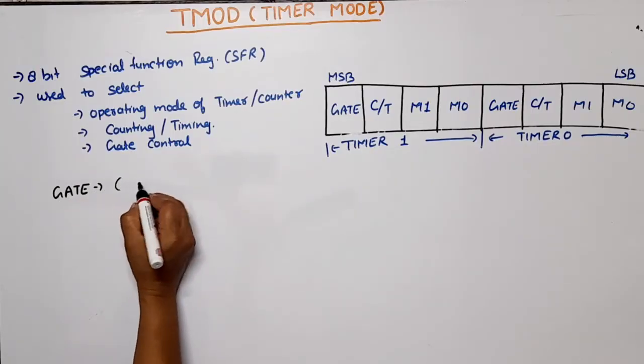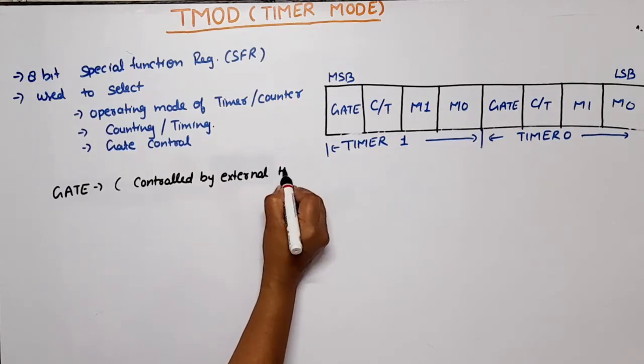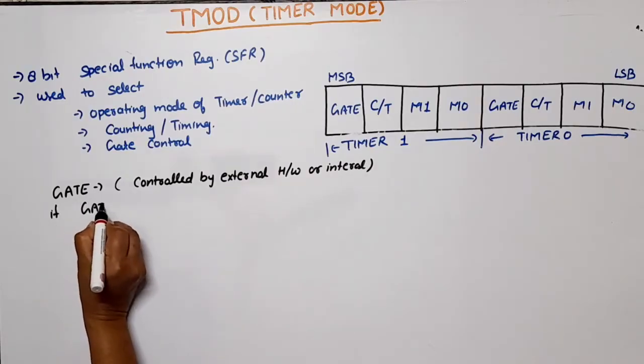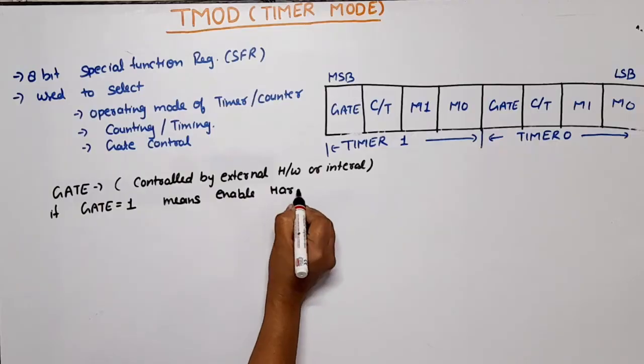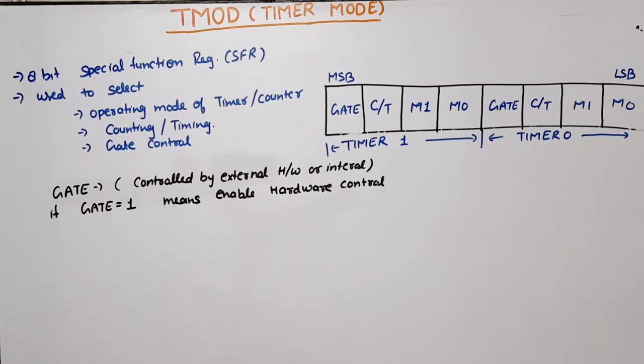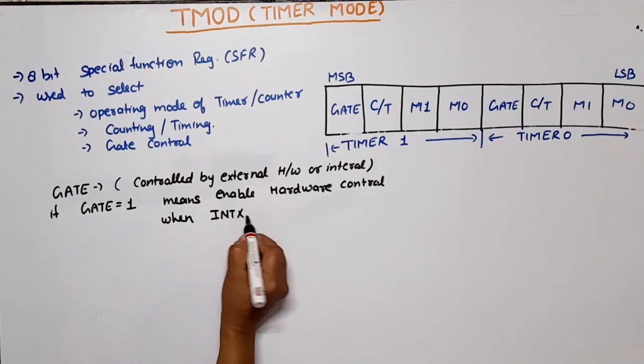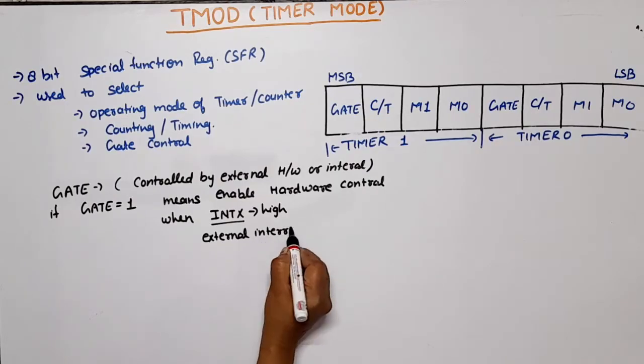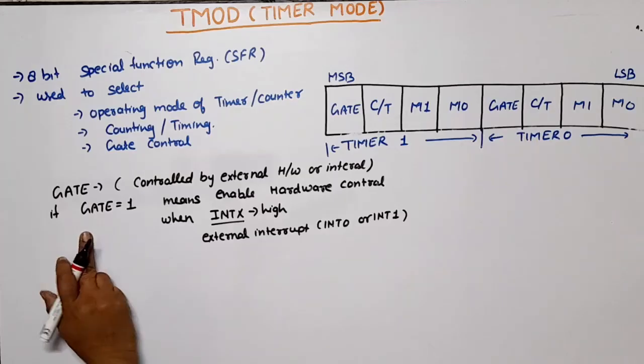Now one by one, let's see every bit's function. This shows controlled by external hardware or internal. If GATE is equal to 1, it means enable hardware control. Timer is controlled through hardware, and timing values will be through hardware. But this timer will be active when INT x is high. INT x is external interrupt, INT 0 or INT 1.